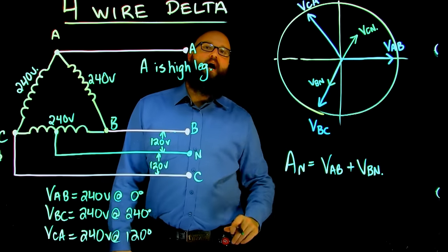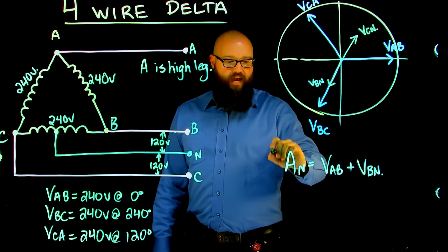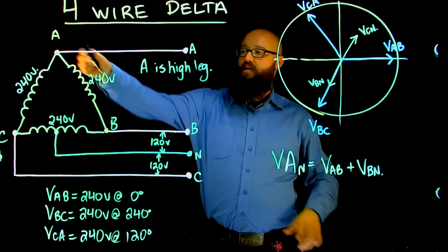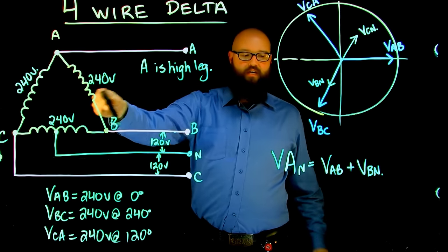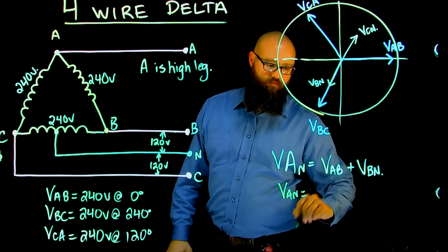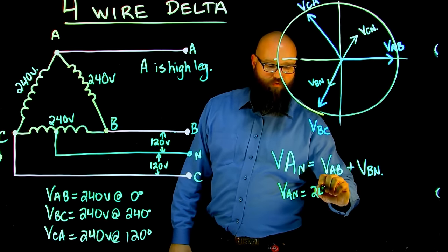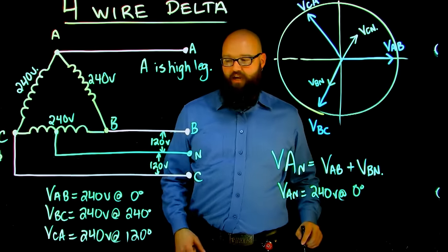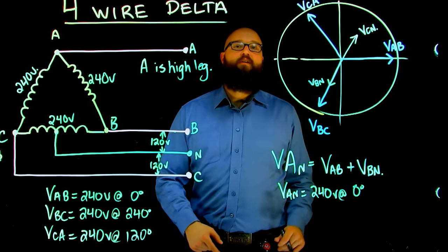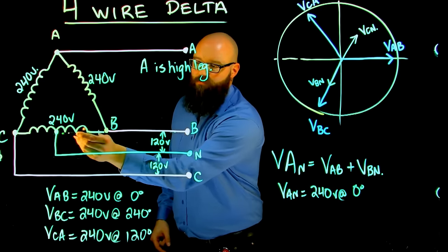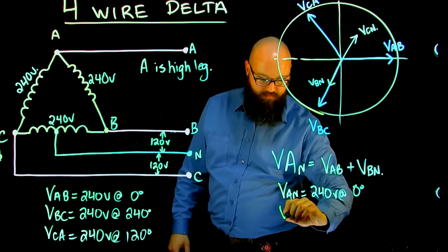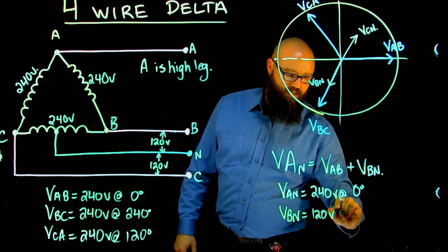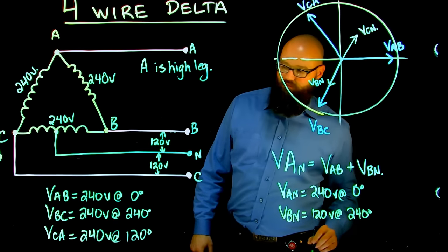So back to our high leg voltage here. A to N, voltage A to N is equal to A to B plus B to N. So let's follow that. A to B is, we have 240 volts at 0 degrees. There's my V A to N, or sorry, A to B rather, plus V B to N. Well, V B to N we just proved was 120 volts at 240 degrees.